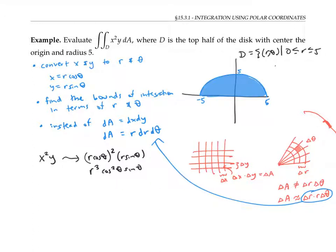and theta goes from zero to pi at the negative x axis. The bounds on r and theta become our bounds of integration. r goes from zero to five, and theta goes from zero to pi.